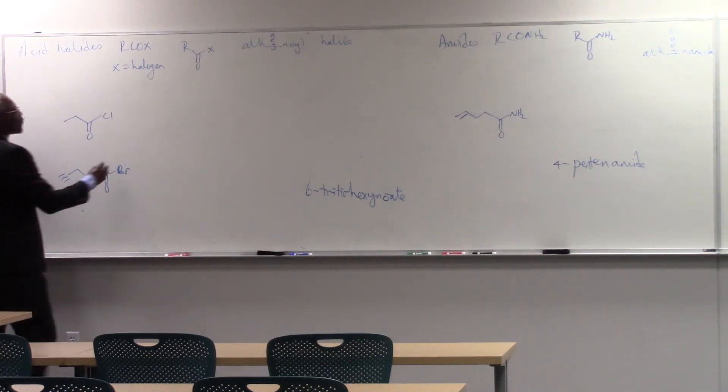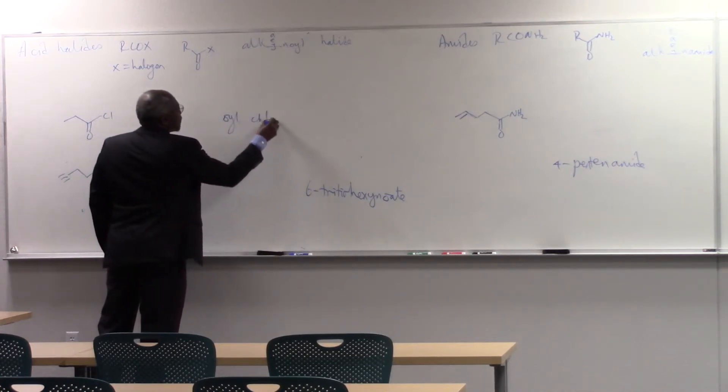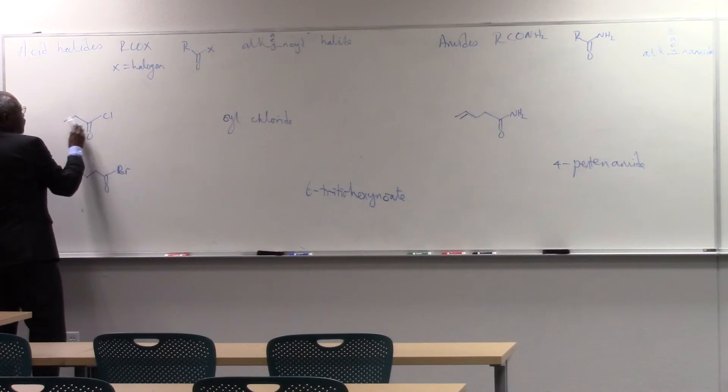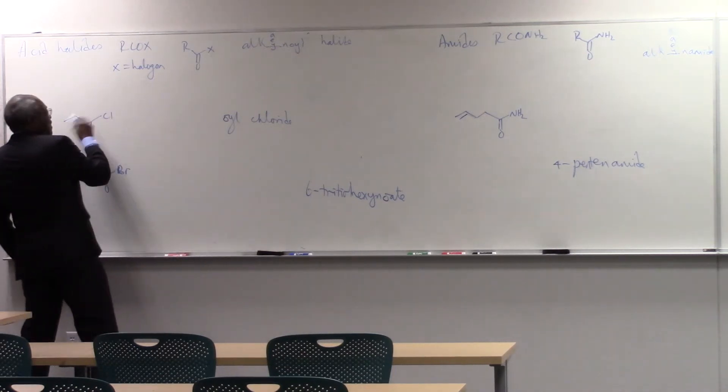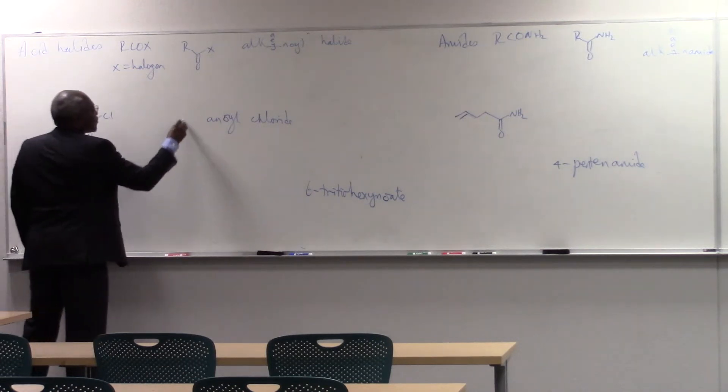So this will be, I'm going to write, oyl, chloride, two words. 1, 2, 3, well, carbon chain is saturated, so an oyl. 1, 2, 3, propanoyl.